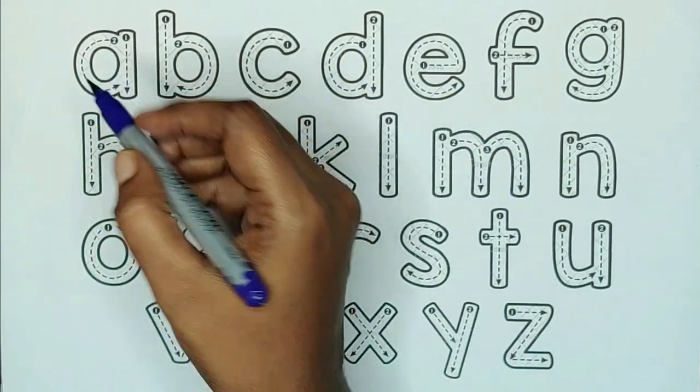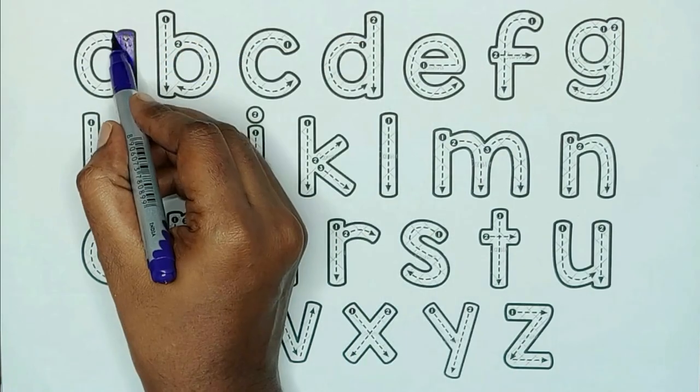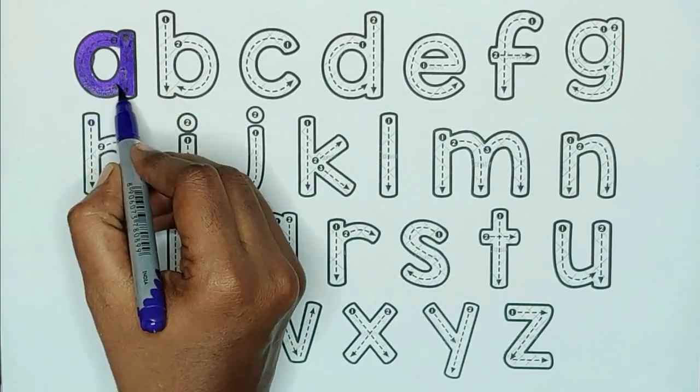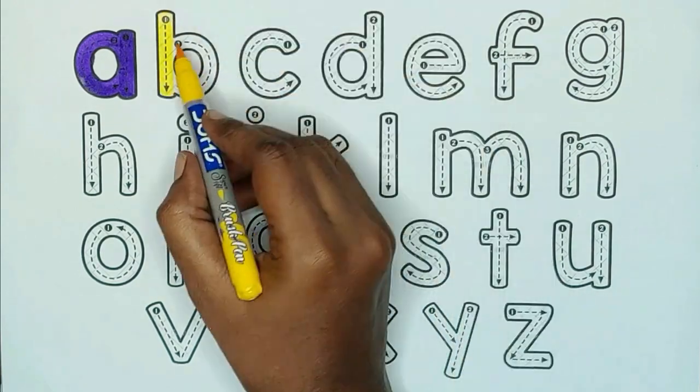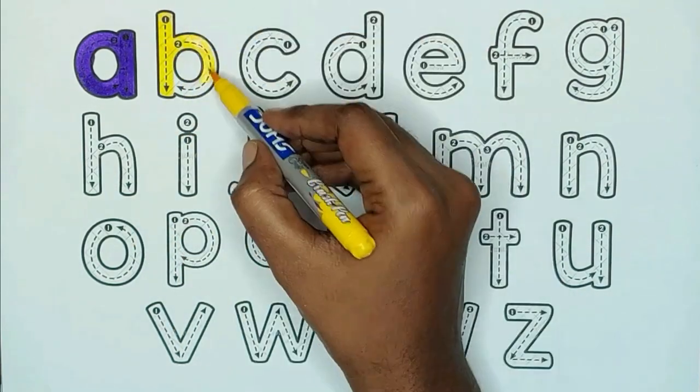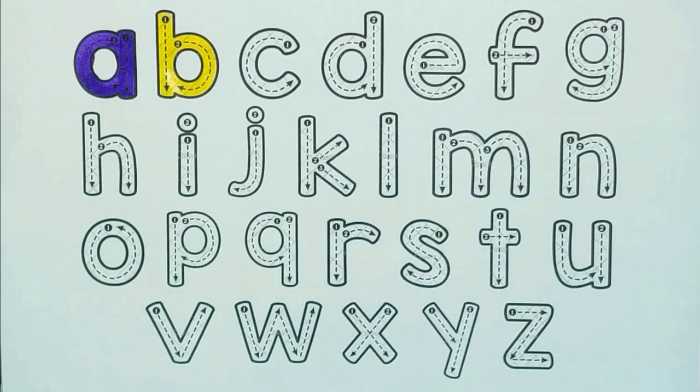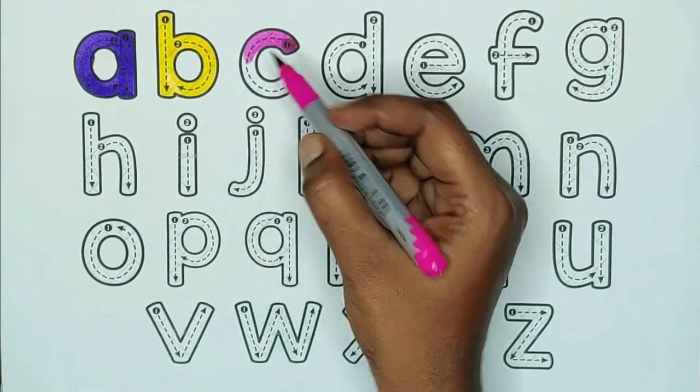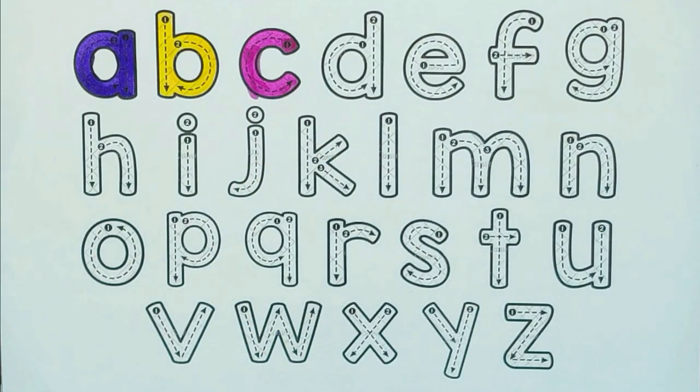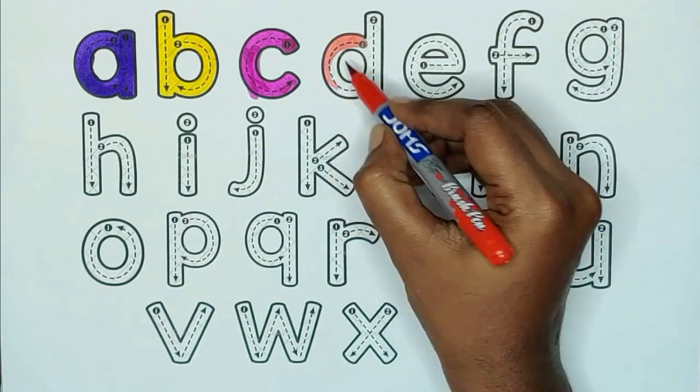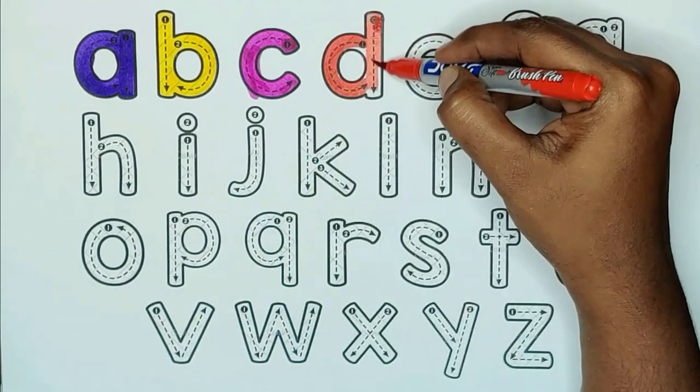Violet color, A, A for ambulance. Yellow color, B, B for bulb. Pink color, C, C for caravan. Red color, D, D for doll.